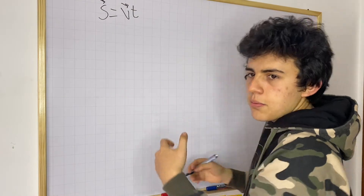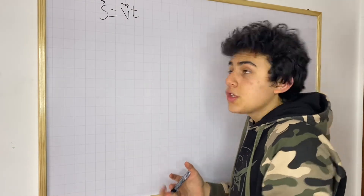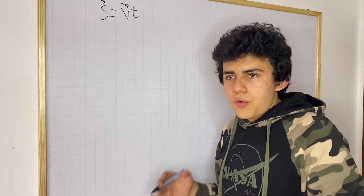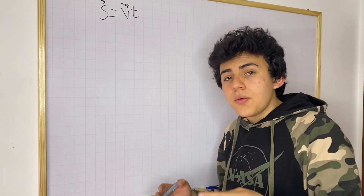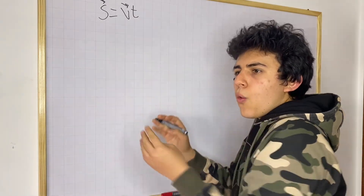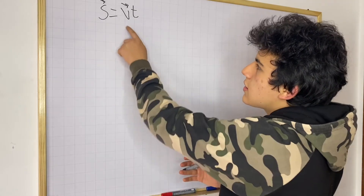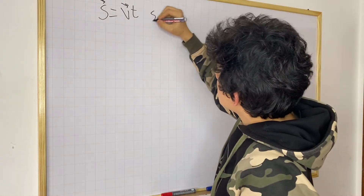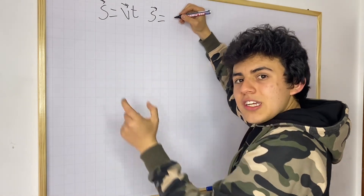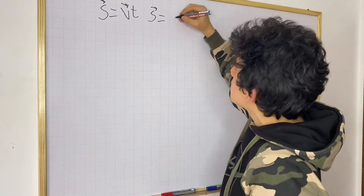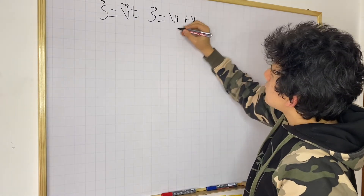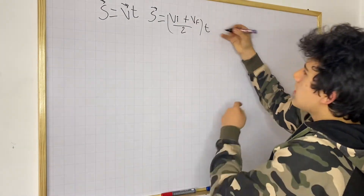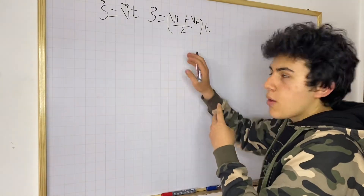Now we can start making assumptions using some intuition. In one-dimensional kinematics, this velocity is simply an average velocity — we're assuming no acceleration within a frame of time, asking what the change in position is. So we could write displacement equals average velocity times time, and since an average is the sum of elements divided by the number of elements, that becomes: displacement equals initial velocity plus final velocity, divided by 2, times time.